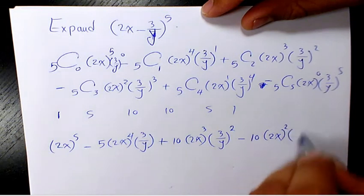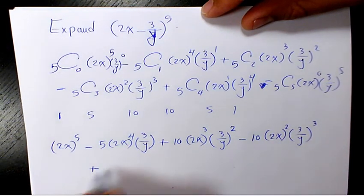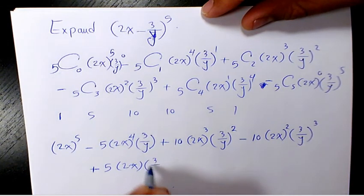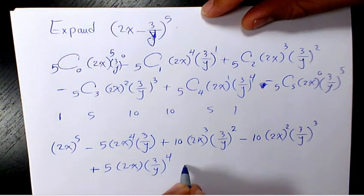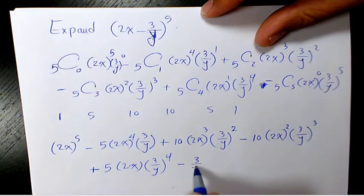(2x)^2(3/y)^3 plus 5(2x)(3/y)^4 minus 1(3/y)^5.